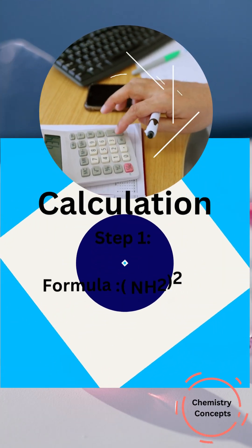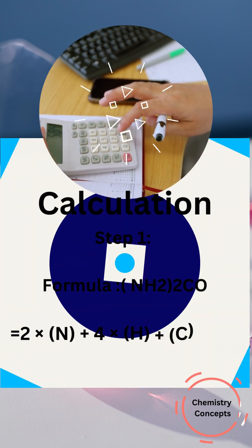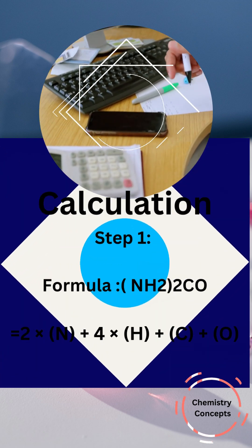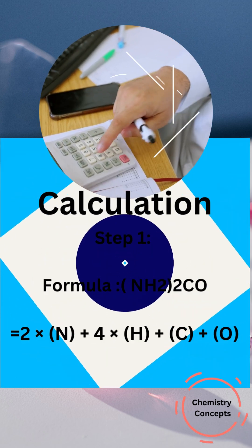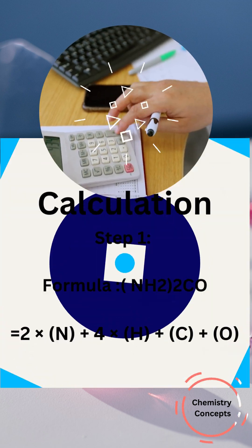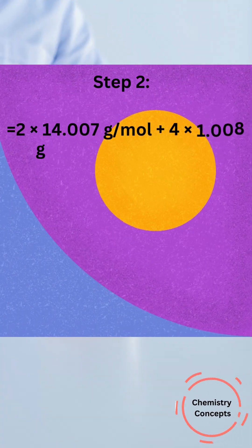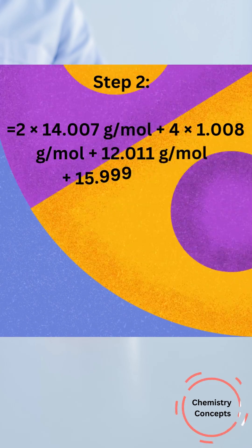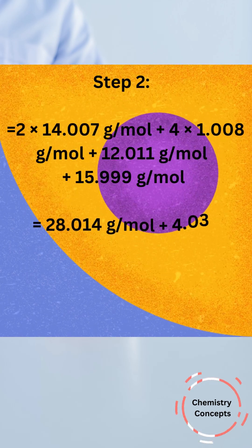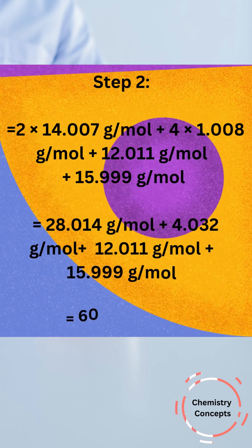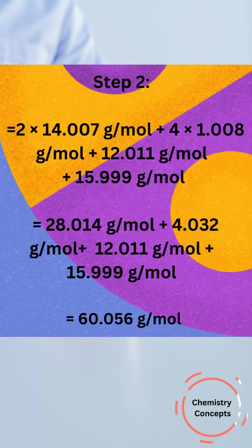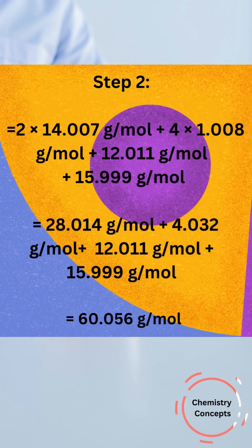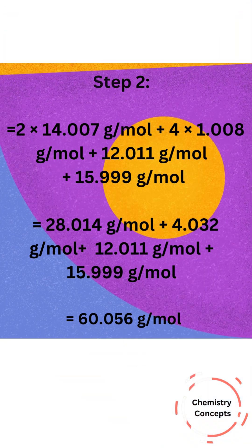Calculation. Step 1 — Formula: (NH₂)₂CO equals 2 times N plus 4 times H plus C plus O. Step 2: equals 2 times 14.007 grams per mole plus 4 times 1.008 grams per mole plus 12.011 grams per mole plus 15.999 grams per mole, equals 28.014 plus 4.032 plus 12.011 plus 15.999, equals 60.056 grams per mole.